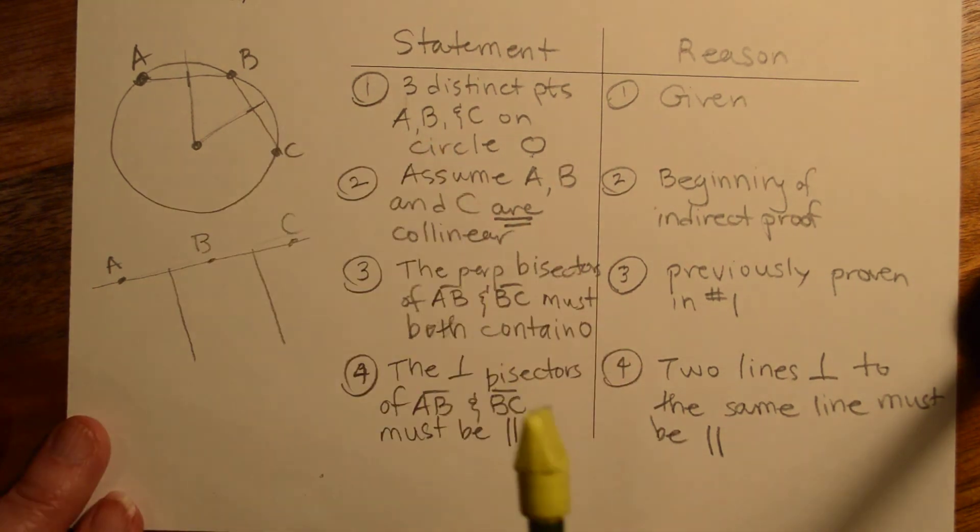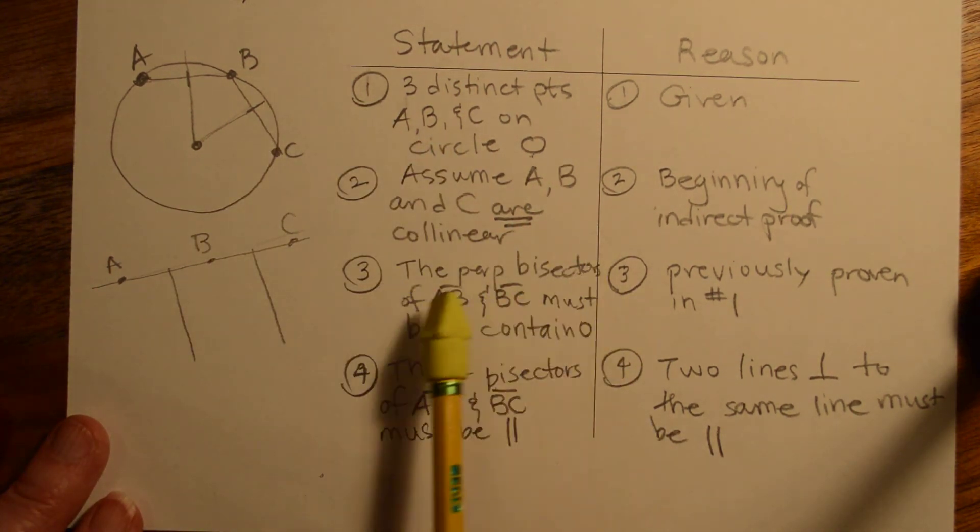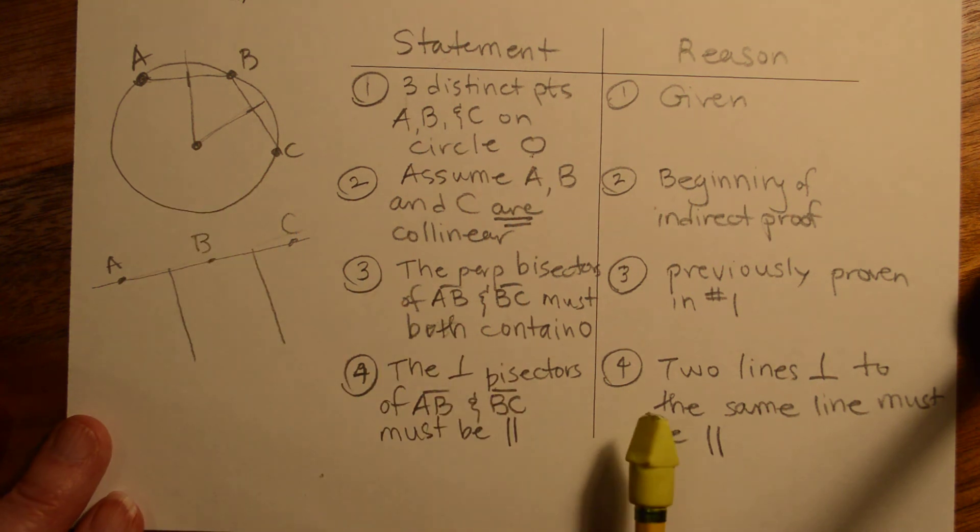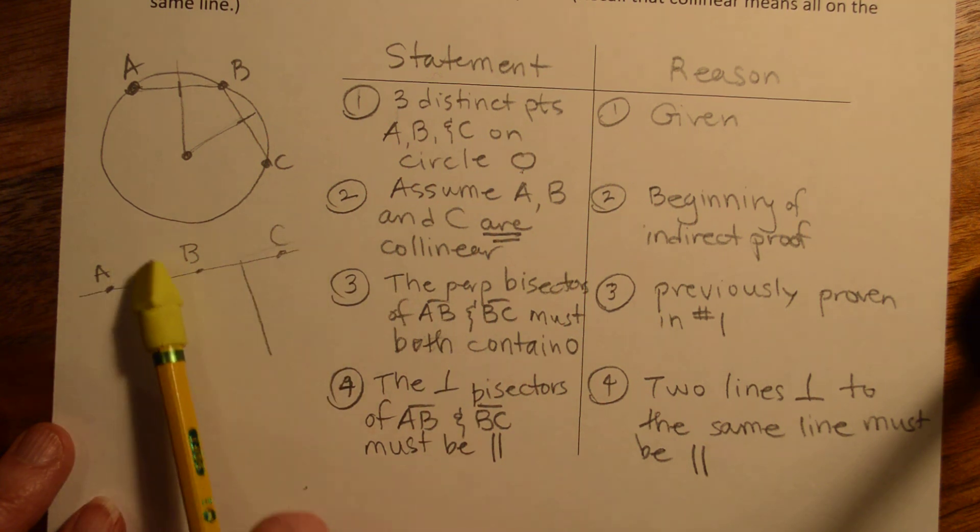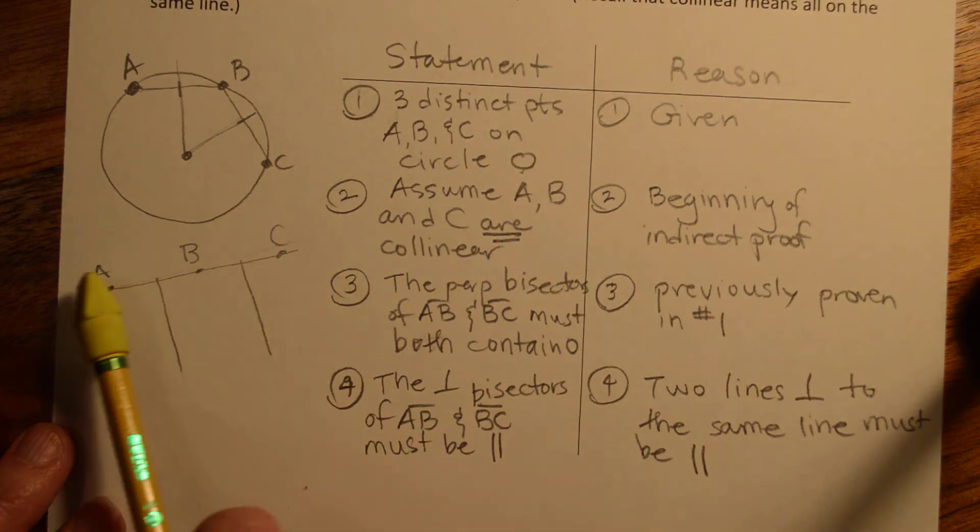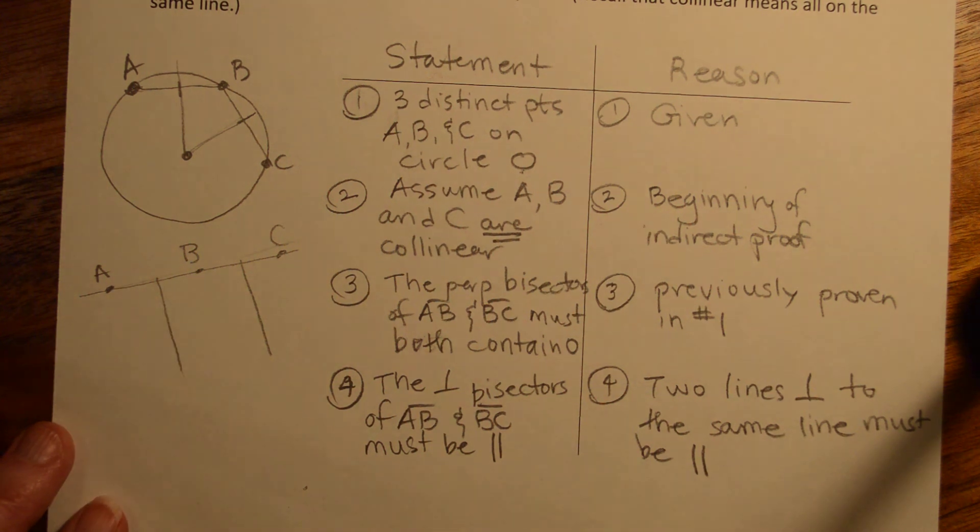All right, so for one thing, from the previous proof that we did, we know that the perpendicular bisectors have to meet at the center of the circle, but we also know by our false assumption here that if A, B, and C are collinear, then their perpendicular bisectors are perpendicular to the same line, and therefore they must be parallel.